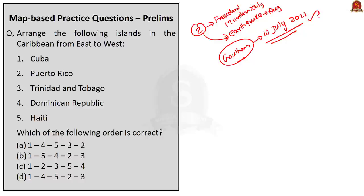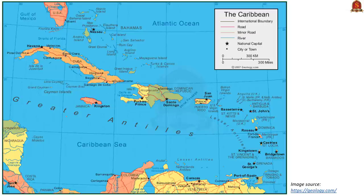Now let's move on to the question. Five Caribbean islands are given and we are asked to arrange them from east to west. The islands are Cuba, Puerto Rico, Trinidad and Tobago, Dominican Republic, and Haiti. Looking at the map, Cuba is in the westernmost part. The east-to-west arrangement is Cuba, Haiti, Dominican Republic, Puerto Rico, and Trinidad and Tobago.